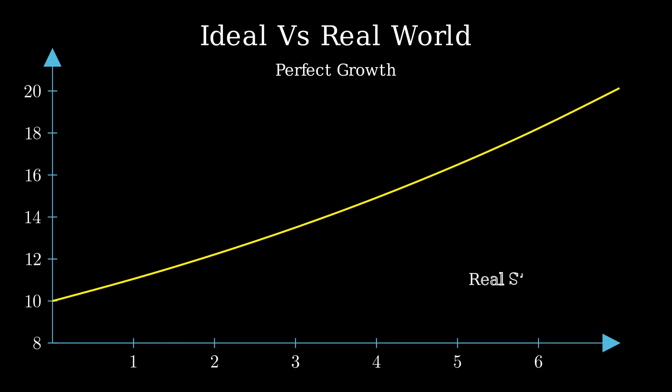But what if you want to invest into stocks in the real world? It might soar to $12 one day, then crash to $8 the next. This messiness is what stochastic processes capture, which is the randomness over time.